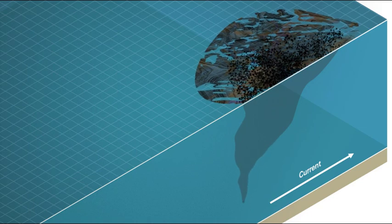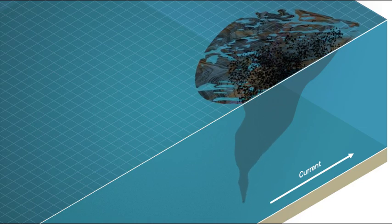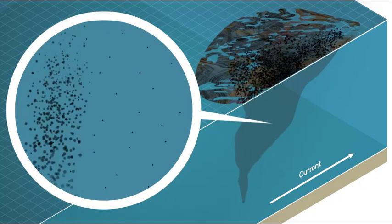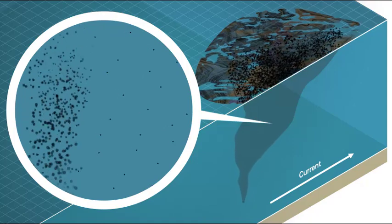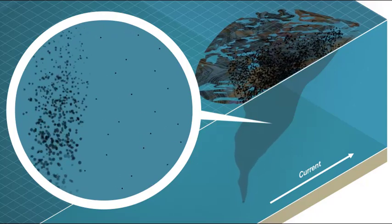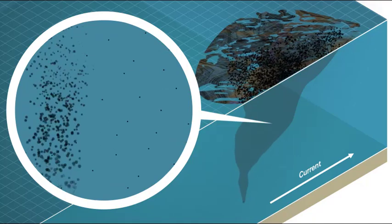The lighter and gaseous components may dissolve into the water column. Larger droplets rise through the water column more quickly, whilst the very smallest oil droplets may be neutrally buoyant and remain in the water column.